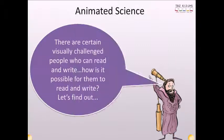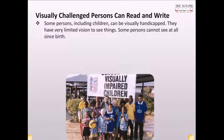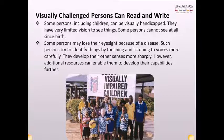There are certain visually challenged people who can read and write. How is it possible for them to read and write? Visually challenged persons can read and write. Some persons, including children, can be visually handicapped. They have very limited vision to see things. Some persons cannot see at all since birth. Some persons may lose their eyesight because of a disease. Such persons try to identify things by touching and listening to voices more carefully. They develop their other senses more sharply. However, additional resources can enable them to develop their capabilities further.